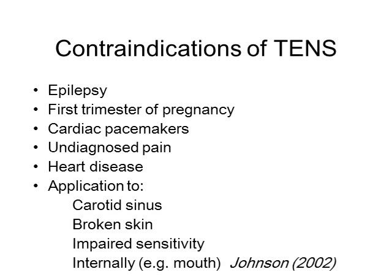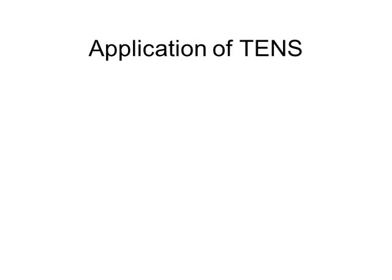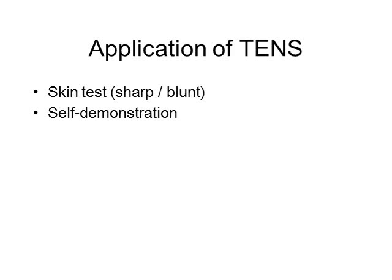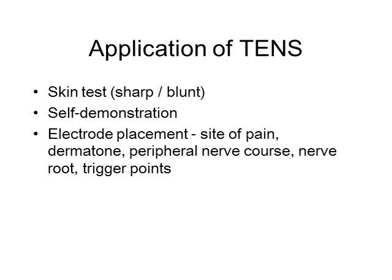The contraindications of TENS are outlined here. Care should also be taken when driving or operating machinery, and patients should be reminded of this. When applying TENS, you should always determine that the patient's sensation is okay by doing a sharp-blunt test. Self-demonstration is useful and a very quick way to check that the output from the device is okay. Electrodes may be placed in a range of different sites. The most common site is over the area of pain, but other alternatives may be within the same dermatome, over the peripheral nerve, over the nerve root, or to trigger points. There is currently little evidence to suggest which might be most effective.